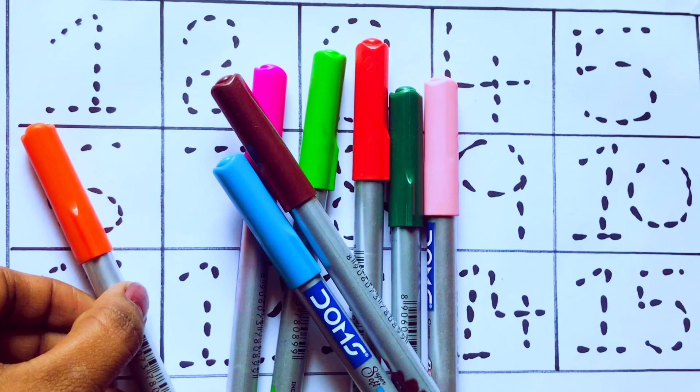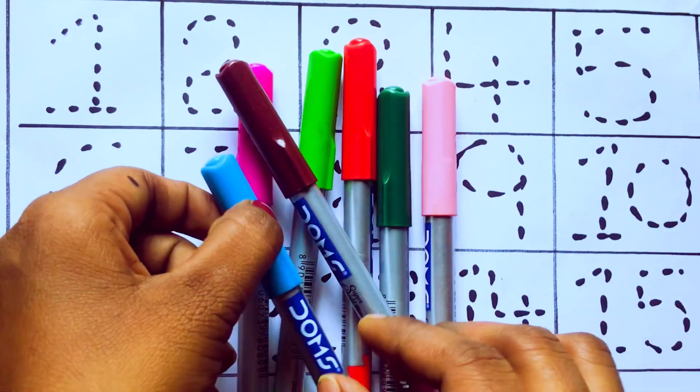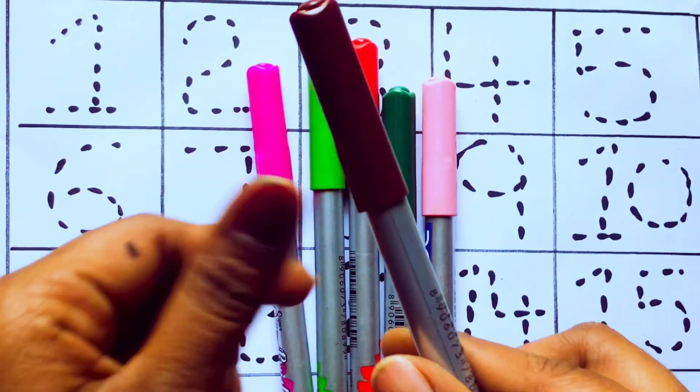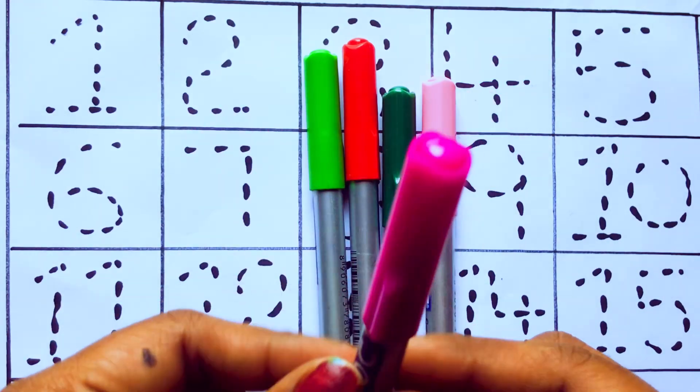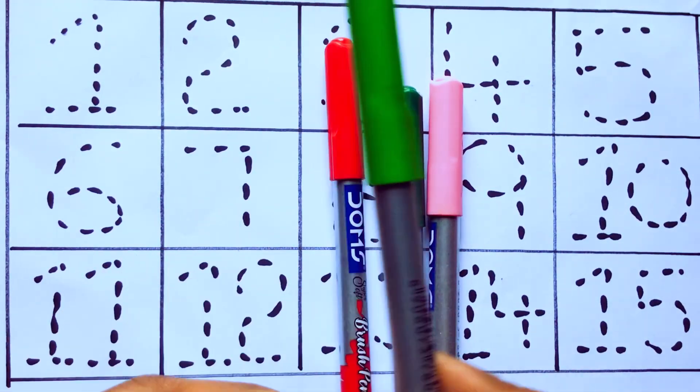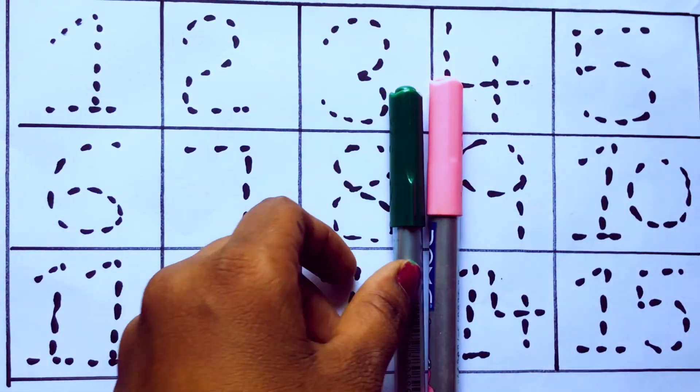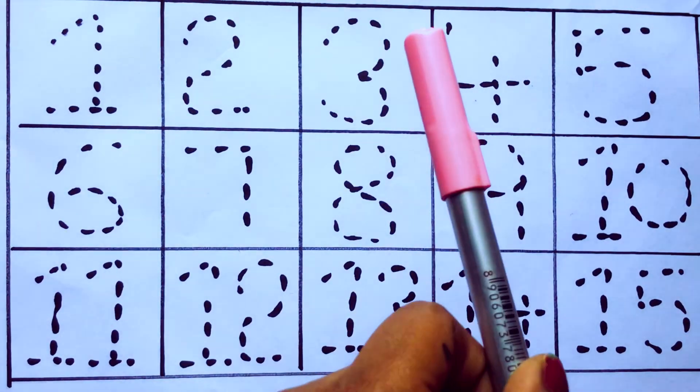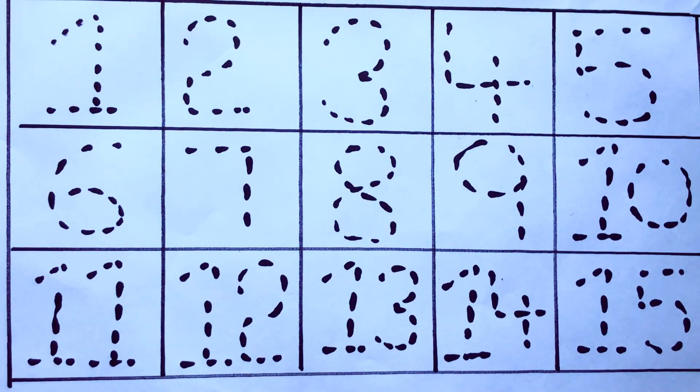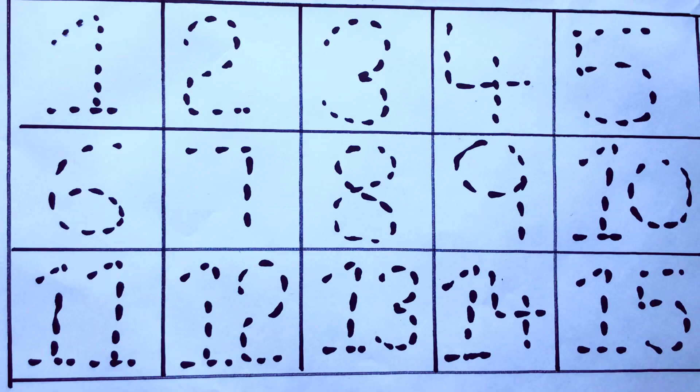Yellow color, orange color, sky blue color, brown color, pink color, green color, red color, green color, and pink color. Let's draw the numbers.